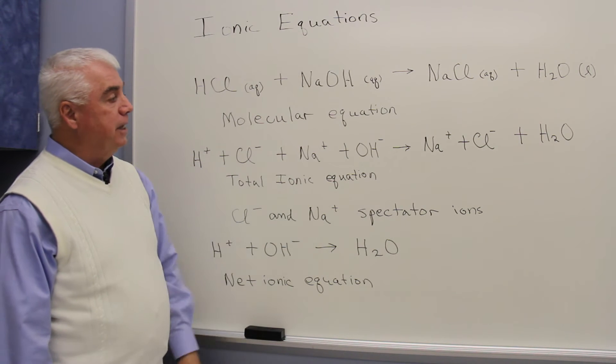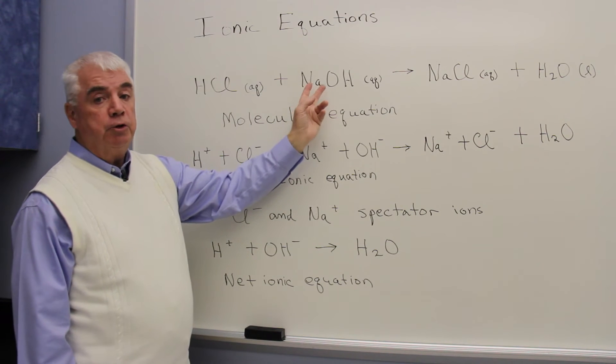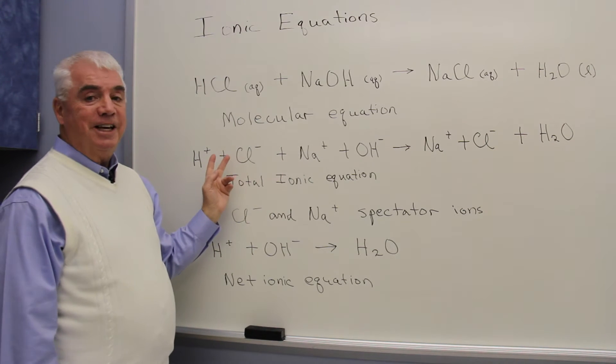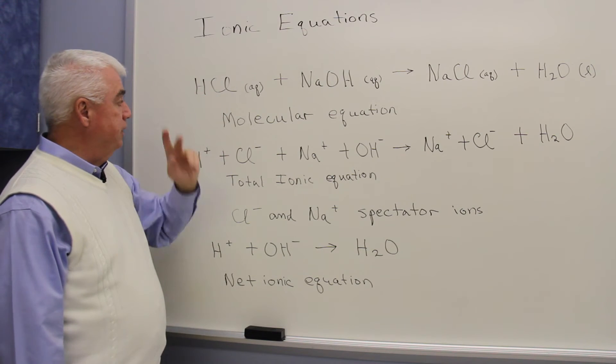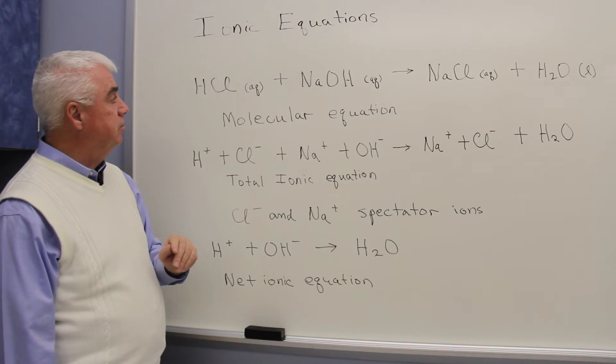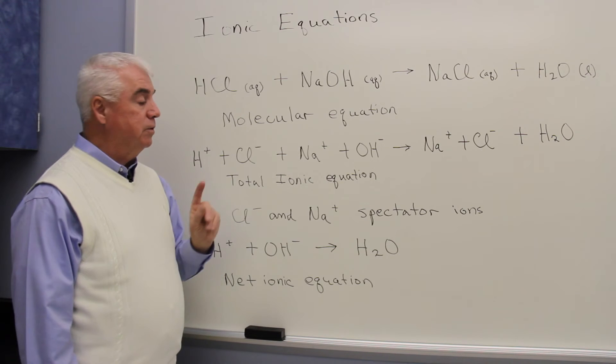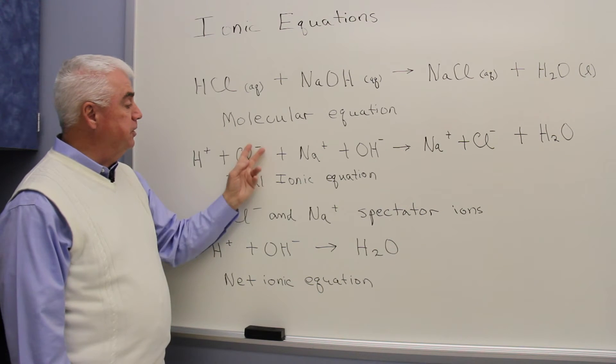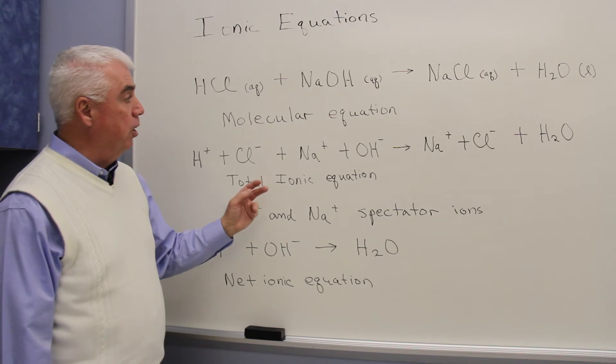Because this reaction takes place in water, and because these materials can dissociate or ionize, it's appropriate to indicate the ions that actually form in water. So as HCl breaks apart to form H⁺ and Cl⁻, we'd predict this, because Chlorine is in group 7A. It has seven valence electrons. It needs one more, so it tends to take on a minus charge. That means the hydrogen has a positive charge.